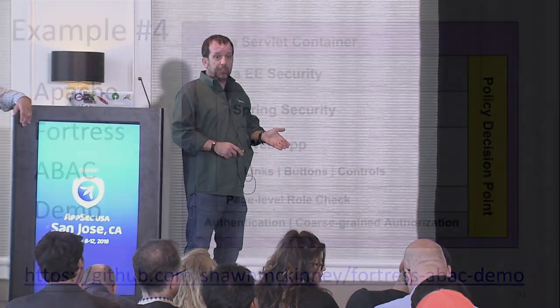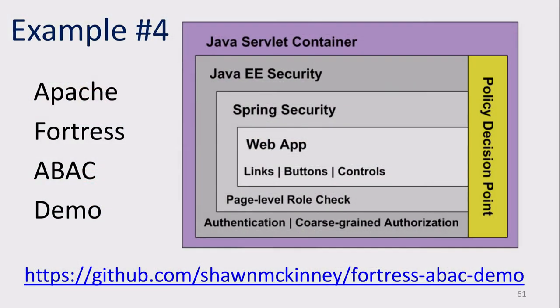This role explosion problem that John just told you about has been demonstrated — that previous app was basically an implementation of role explosion where we had fine-grained roles, too many roles. It works with three customers, but what if you had 50,000 customers? Are you going to have 150,000 roles?